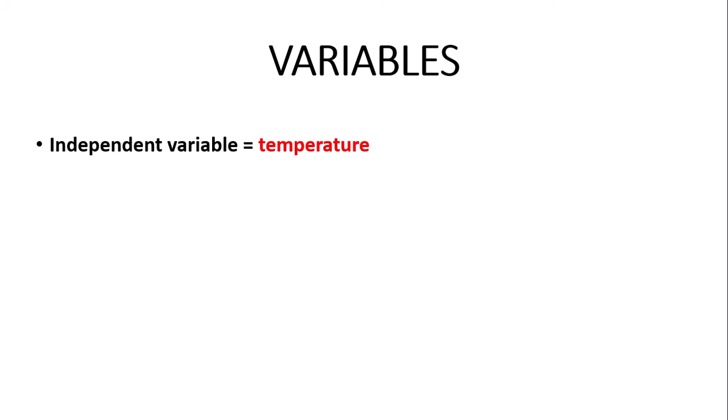So the variables for this particular experiment. The independent variable, which is the thing that you change, will be the temperature. It also could be things like pH, enzyme concentration, or substrate concentration, but in this video we will be focusing on the effect of temperature. The dependent variable is the thing that you measure, so in this case it will be the rate of the enzyme controlled reaction — the rate of trypsin activity.